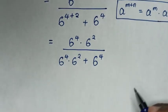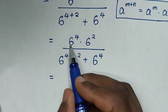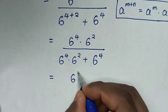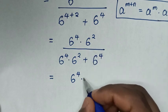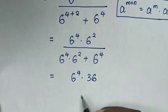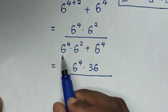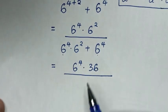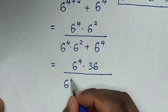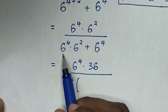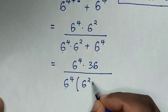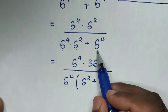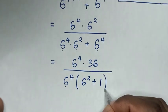Then in the next step, it will be equal to 6 power of 4 times 6 power of 2, which is 6 squared, which is 36. Then over, in here the numerator, 6 power of 4 is common, so we'll take 6 power of 4 out of the bracket. Then 6 power of 4 times 6 power of 2 divided by 6 power of 4 is 6 power of 2.